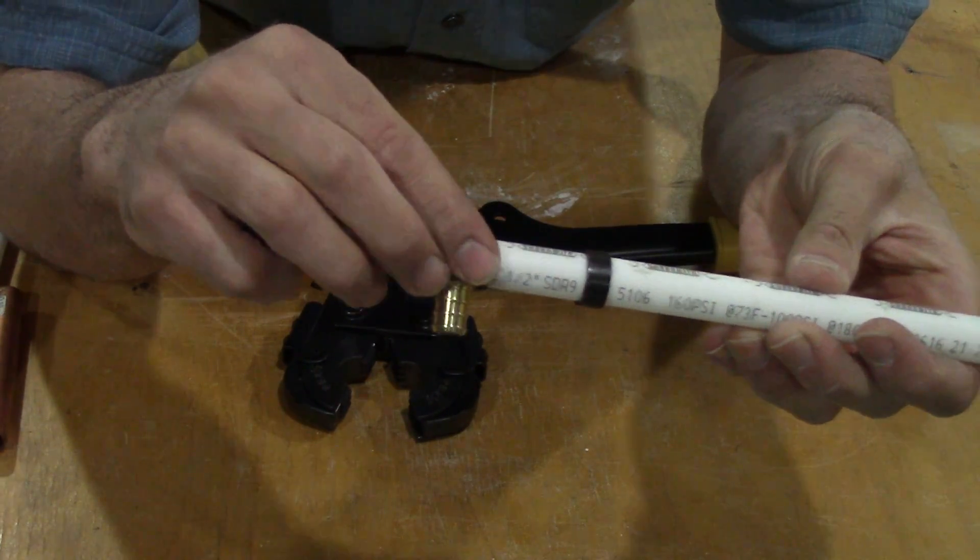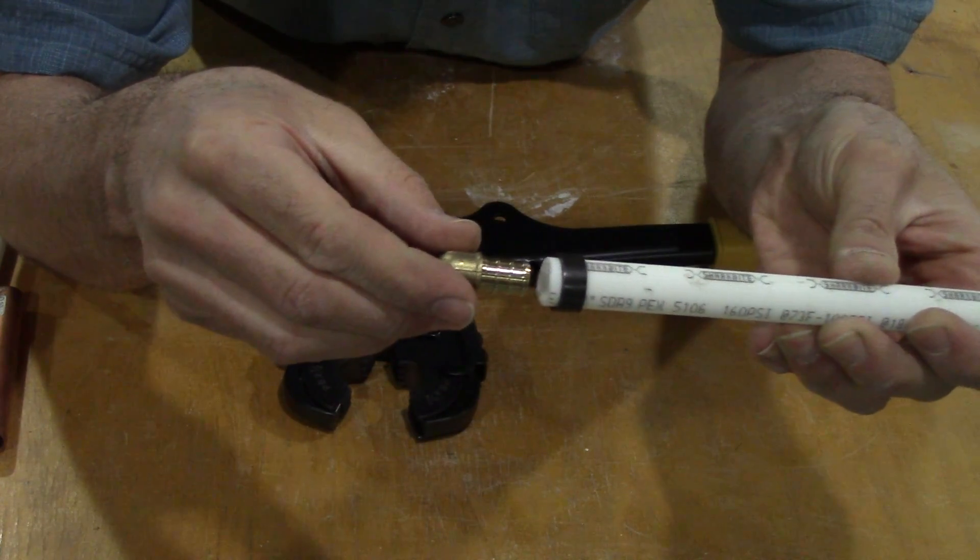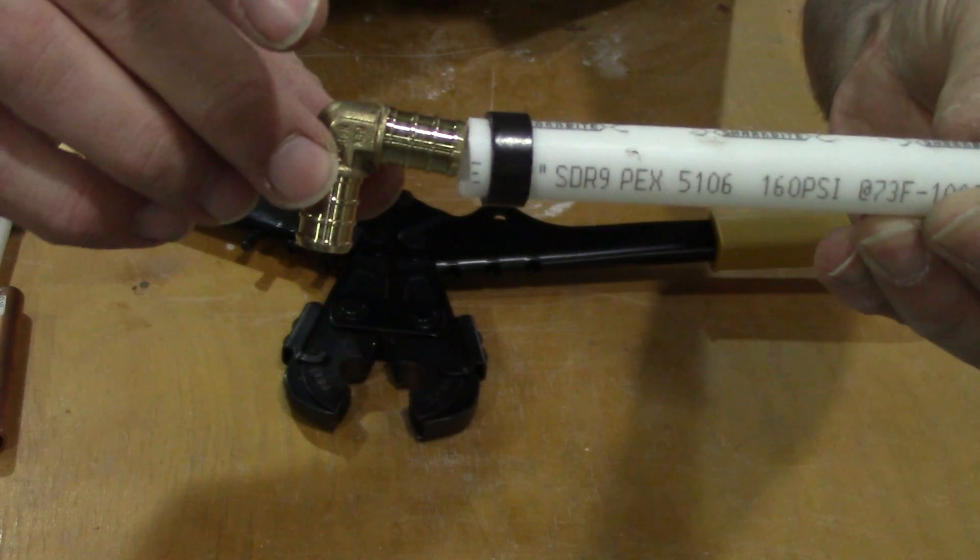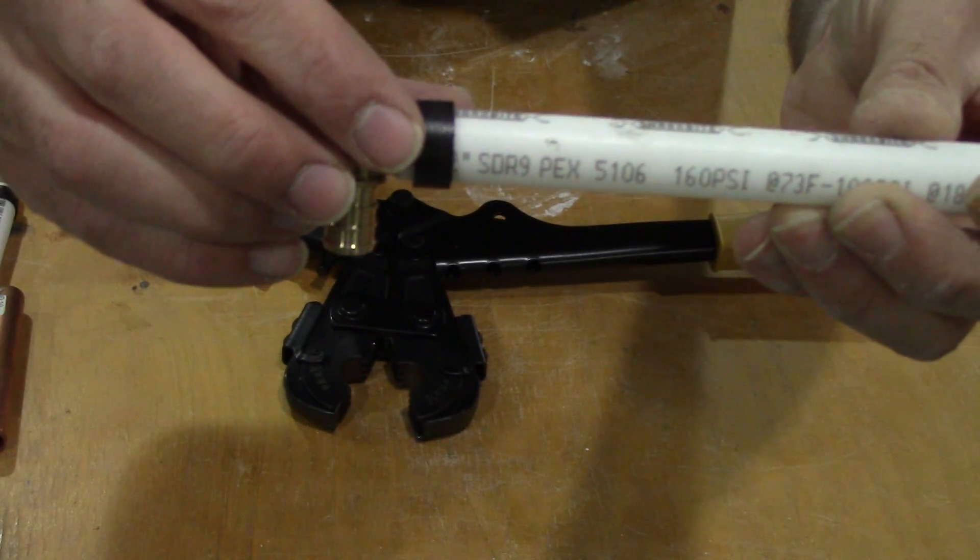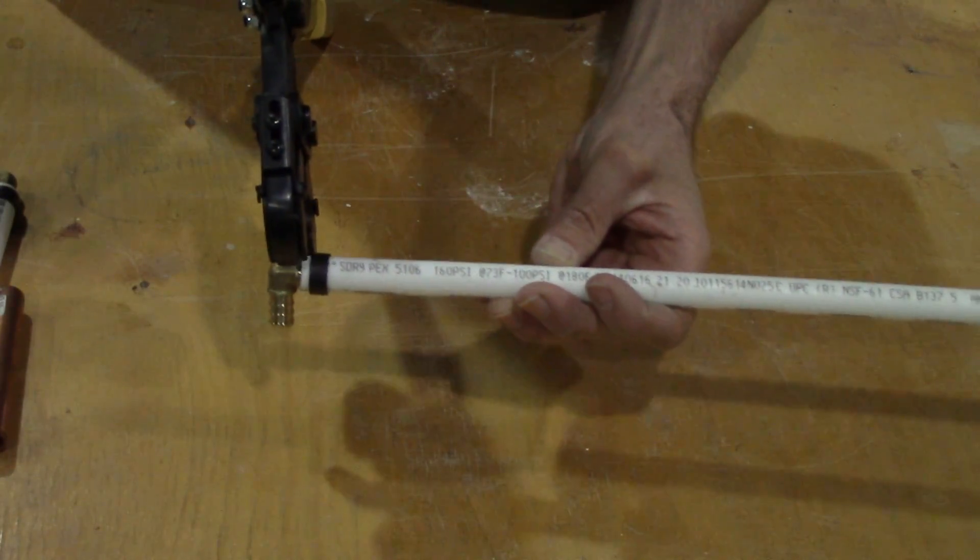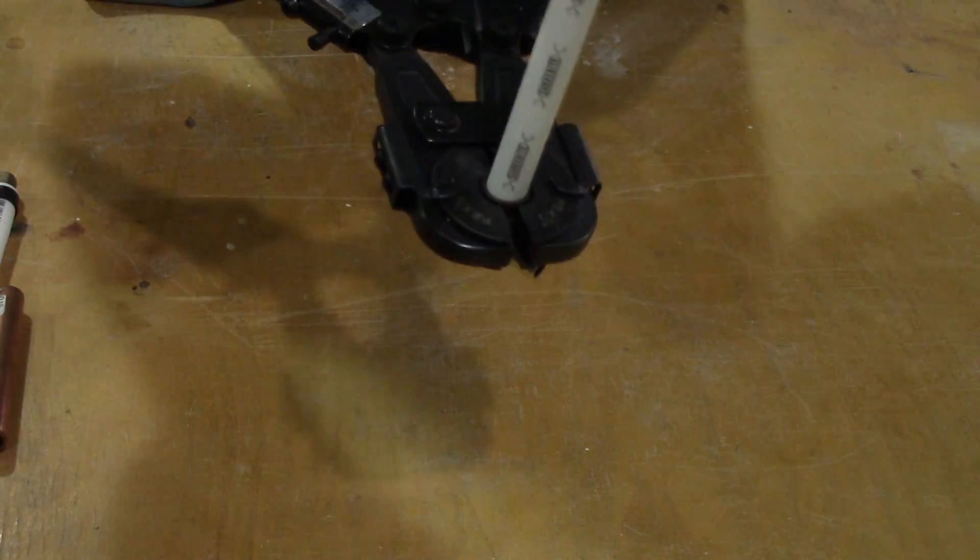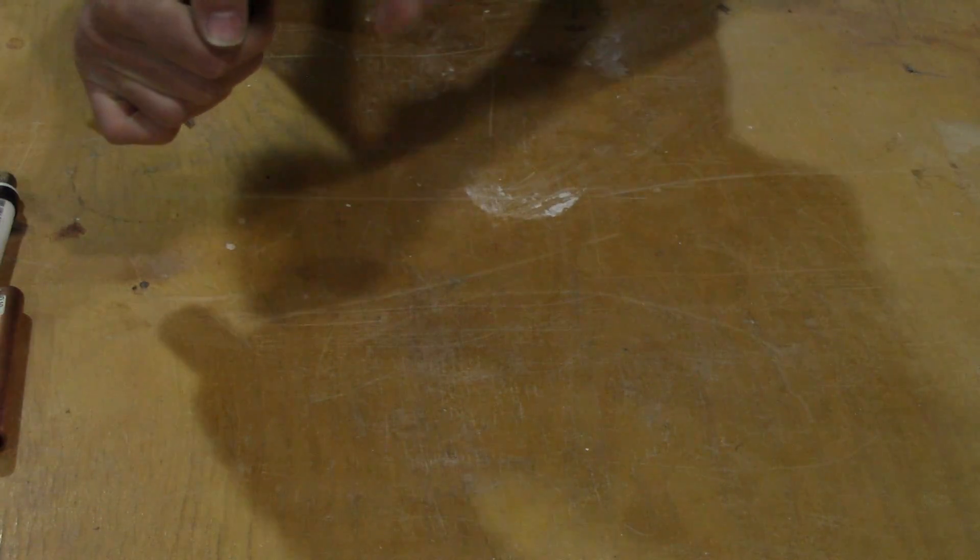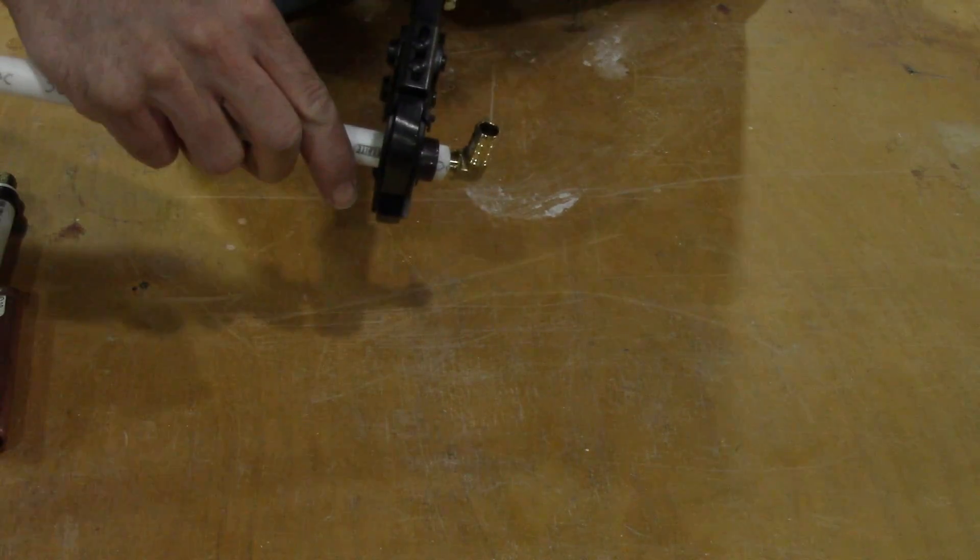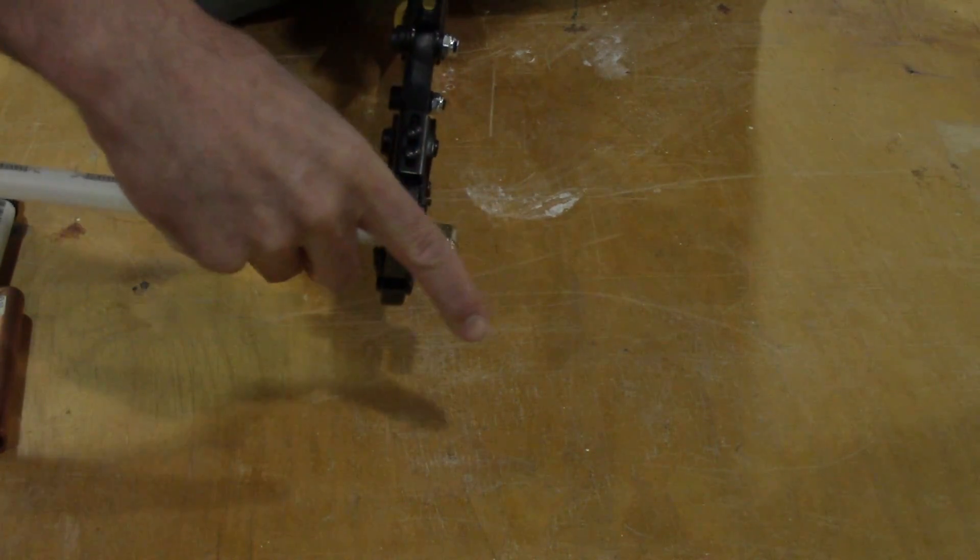I got the piece in. You want it in all the way, and this ring right about there so that it's in the middle of these ribs. Just about like that. I'm going to put it in here. Let me get it lined up for the camera. Okay, push that in.